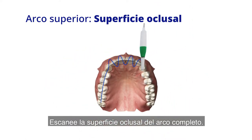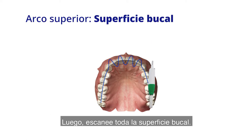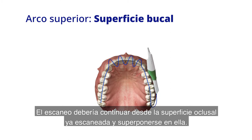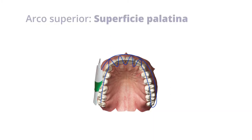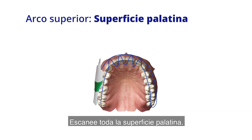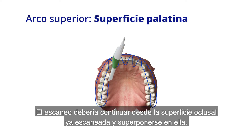Scan the occlusal surface of the entire arch. Next, scan all of the buccal — the scan should continue from the occlusal surface already scanned and overlap with it. Then scan all of the palatal, again continuing from the occlusal surface already scanned and overlapping with it.